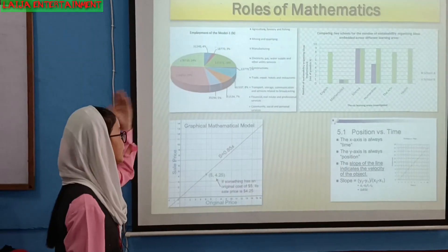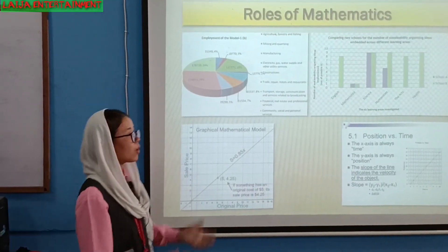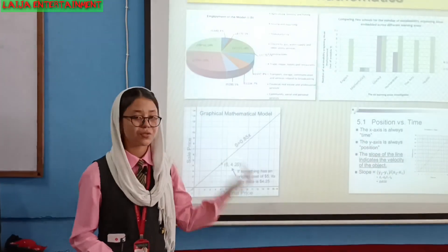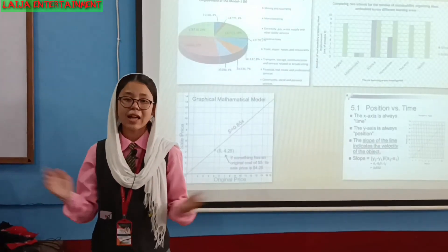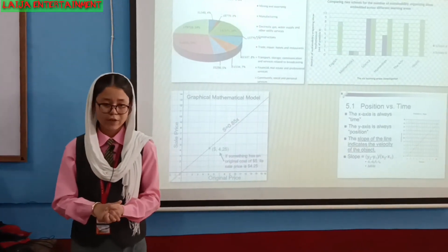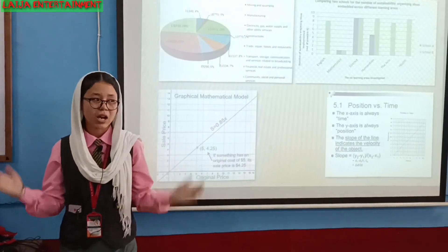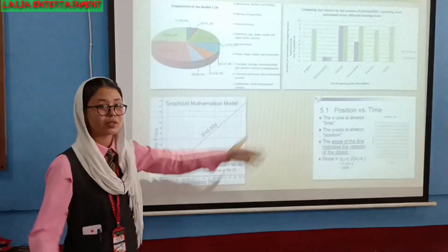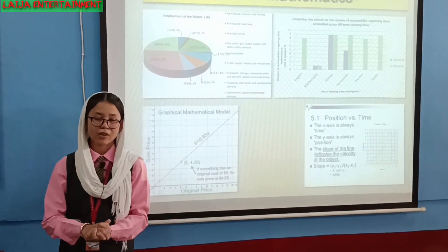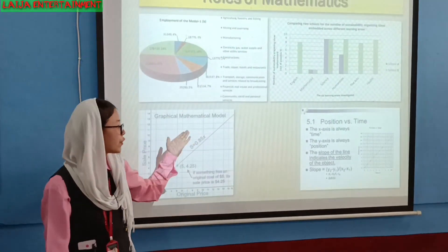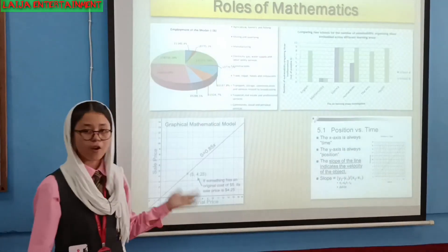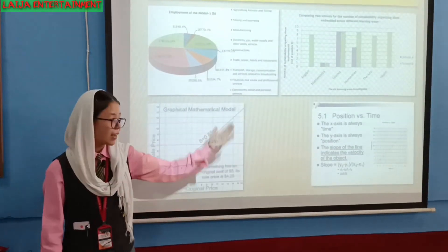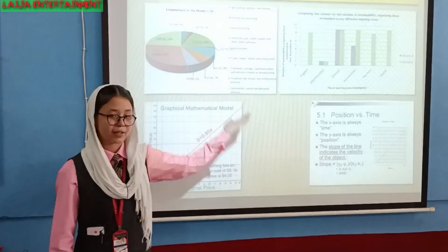From the bar chart, we find unemployment models in different fields like agriculture, mining, construction, community, social and personal services, etc. A bar graph chart gives comparison of two schools, A and B, across different learning areas. Graphical model charts give comparison of original and sale price of a commodity, and distance and time.